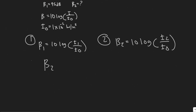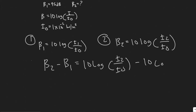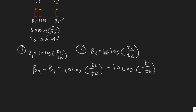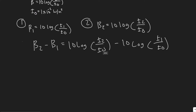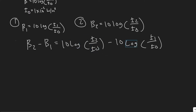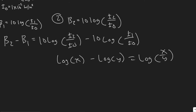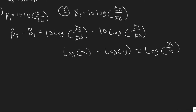So beta two minus beta one equals 10 log of I₂ over I₀, minus 10 log of I₁ over I₀. All this is doing is writing beta two minus beta one in their equation forms. Now we want to combine these log terms. You should know that log(X) minus log(Y) equals log(X/Y), meaning subtraction of logs becomes division inside a single log.